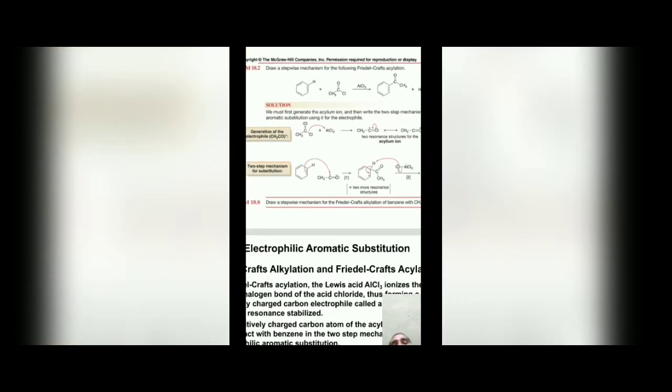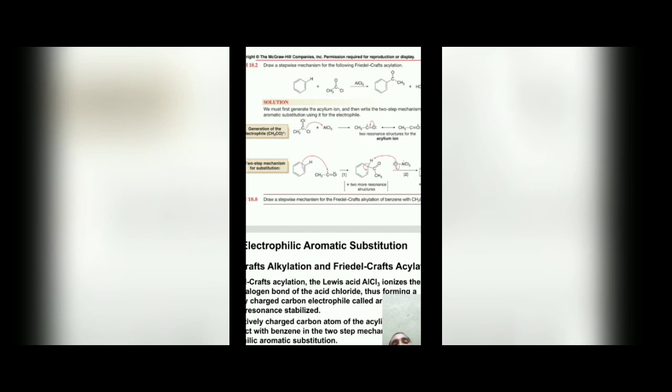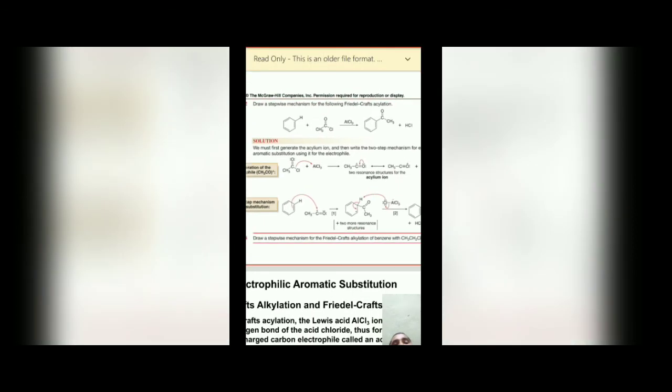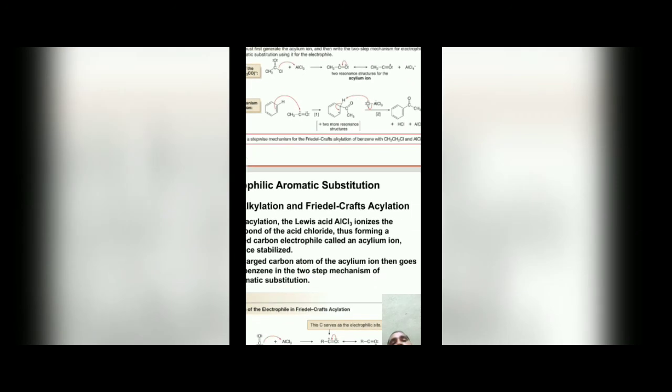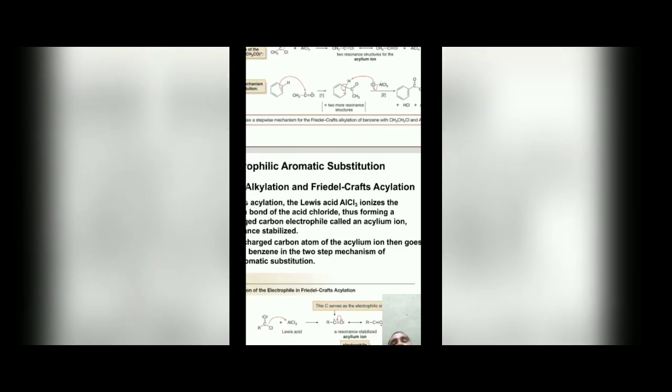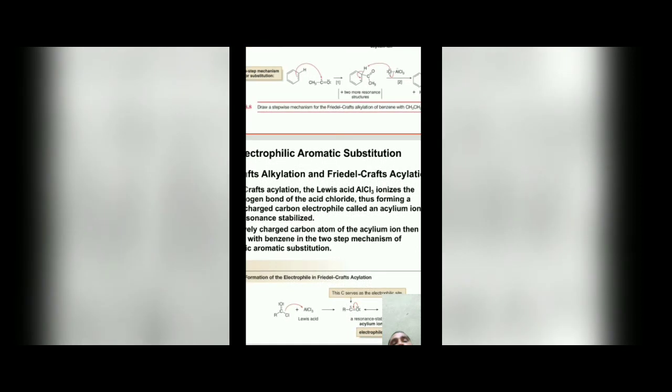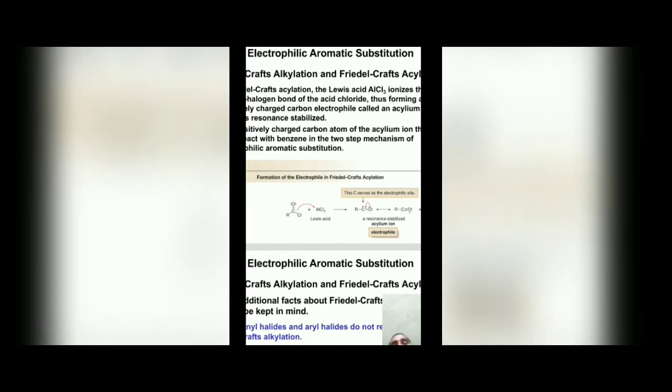For Friedel-Crafts acylation, benzene reacts with acetyl chloride in the presence of AlCl3 to give acetophenone. The acylium ion (RCO+) acts as the electrophile. The electrophile attacks benzene to give three carbocation intermediates, which are stabilized by resonance structures. The combination of these resonance structures gives a resonance hybrid, and loss of one proton from the hybrid gives the final acyl benzene product.